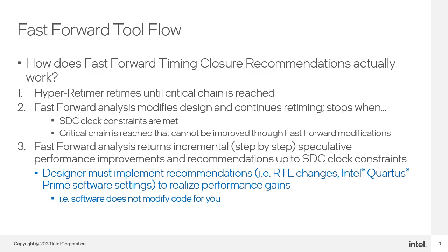Once the analysis is complete, Fast Forward presents the results to you, showing you the changes that were made and the clock speeds that were attained with those changes. Most Fast Forward recommendations will require RTL changes, while others may include changes to settings or constraints. In all cases, you are responsible for making these changes to your actual design. The Quartus Prime software does not modify any source code for you.